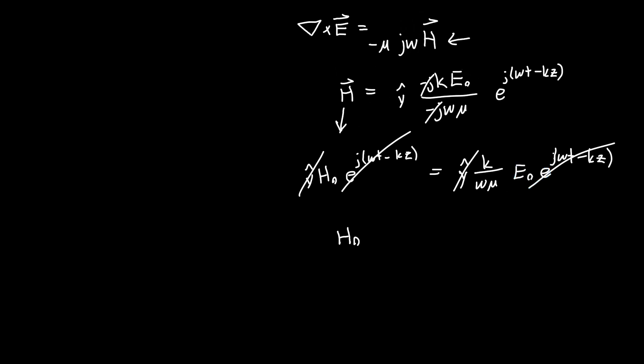So H₀ is just equal to E₀ times this coefficient k/(ωμ). And you can rearrange that by plugging in the value for k and you'll get something that looks really interesting: E₀ times √(ε/μ). So what this says is that the relationship, the amplitude of the H field and the E field, is actually frequency independent. It's frequency independent at least to the degree that ε and μ don't change as a function of frequency. So in free space that's true.